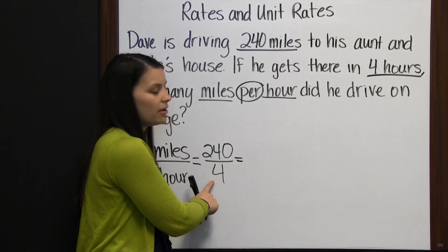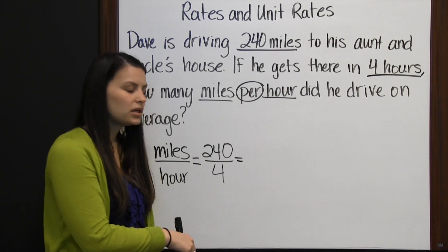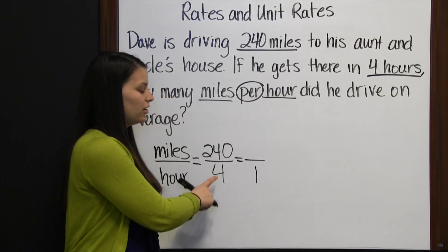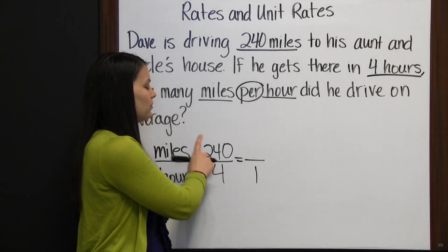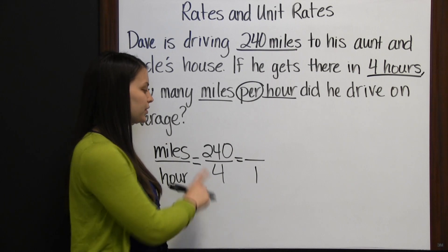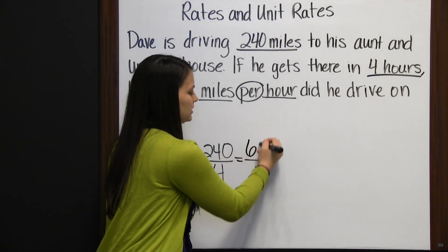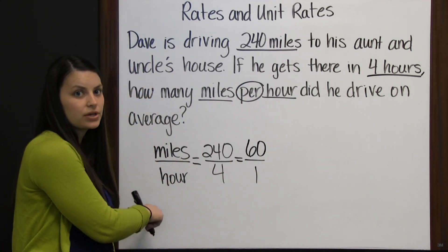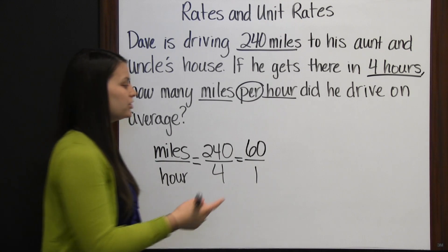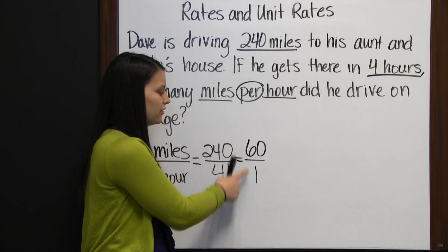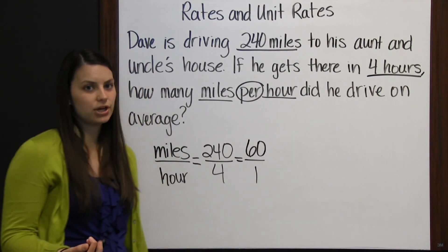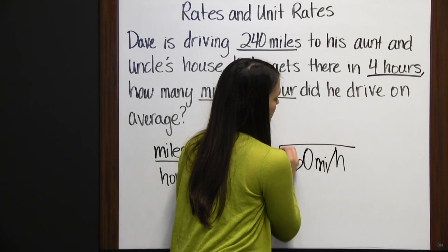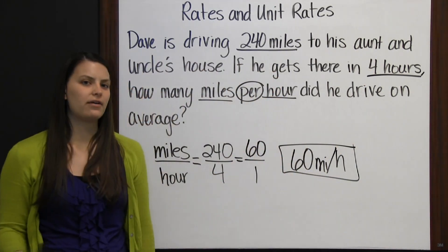So if we want a denominator of 1, we're going to divide 4 by 4 to get our 1. And if we divide our denominator by 4, we must also divide our numerator by 4. 240 divided by 4 is 60. This unit rate tells us that on average he was going 60 miles for every 1 hour. So the answer is 60 miles per hour.